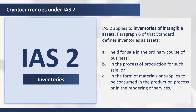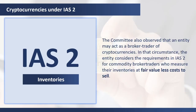IAS 2 applies to inventories of intangible assets. Paragraph 6 of that standard defines inventories as assets that are held for sale in the ordinary course of business, in the process of production for such a sale, or in the form of materials or supplies to be consumed in the production process or in the rendering of services. The committee observed that an entity may hold cryptocurrencies for sale in the ordinary course of business, and in that circumstance a holding of cryptocurrency is inventory, so IAS 2 applies.